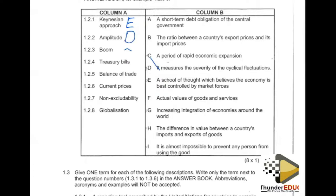For 1.2.3, we have boom. Boom is a turning point of the business cycle that indicates economic activities are performing very well — there is no wastage of resources and they are being used efficiently. In a boom economy, there is full employment — people are working, businesses are making profit, the government collects enough tax, and people can buy goods and services because their purchasing power allows it.